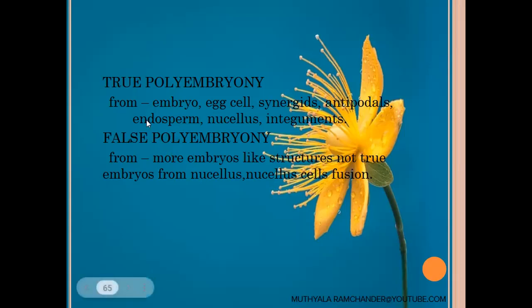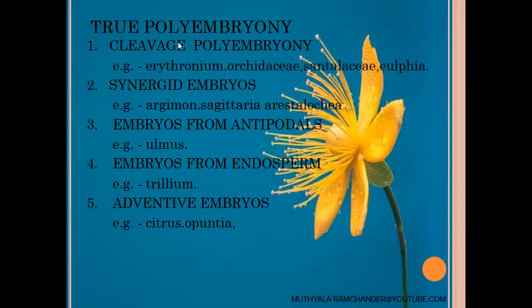Now we discuss the types of true polyembryony. True polyembryony occurs by the following types. The first type is cleavage polyembryony, found in Erythronium, Orchidaceae, Santalaceae, and Ulfea. These are example plants and families for cleavage polyembryony.